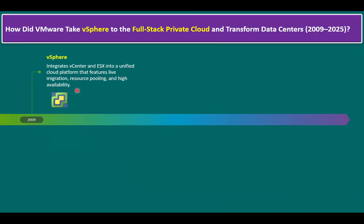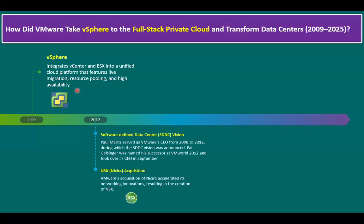After 2009, enhancements continued with each version. By 2012, VMware introduced the SDDC vision — Software-Defined Data Center. Paul, as VMware CEO from 2008 to 2012, announced the SDDC vision. Pat was named his successor at VMworld 2012 and took over as CEO in September. Within this vision, they promised to virtualize not just compute but also networking. To achieve this, VMware acquired Nicira, creating NSX — a network and security platform.